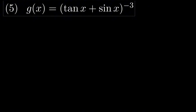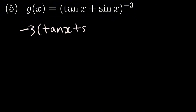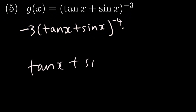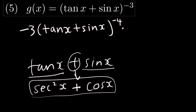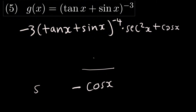For the next question, we use the power rule with power negative 3. Take negative 3 and multiply by the coefficient to get negative 3(tan x + sin x) to the power negative 4, then multiply by the derivative of tan x + sin x. The derivative of tan x is sec squared x and the derivative of sin x is cos x. So the final answer is negative 3(tan x + sin x) to the power negative 4 multiplied by (sec squared x + cos x).